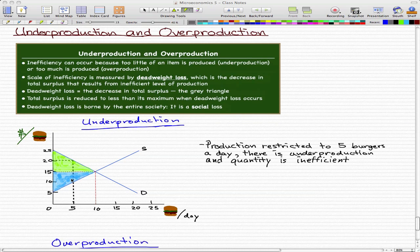The first concept we're going to try to hit on is underproduction. So underproduction, let's just imagine that the production is restricted to five burgers a day, and there is underproduction, so the quantity is inefficient.